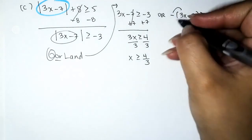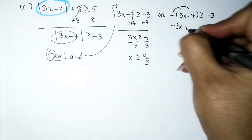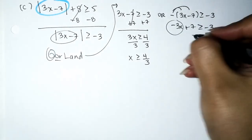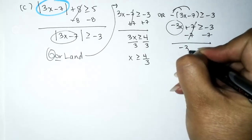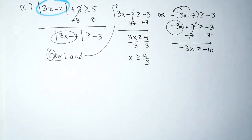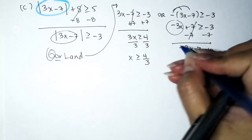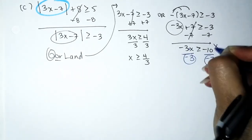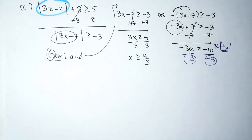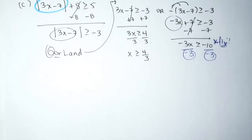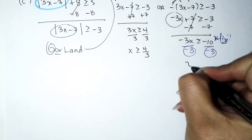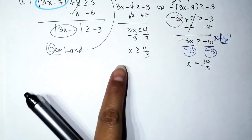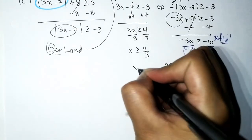Second inequality: distribute the negative — −3x + 7 ≥ −3. Subtract 7: −3x ≥ −10. Divide by −3 and flip: x ≤ 10/3. OR compound inequality, so we take the union.